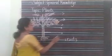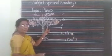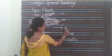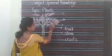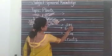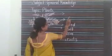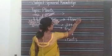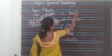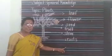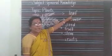Next, stem. Next, fruit. This part is fruit. Inside the fruit is a seed. Next, this part is a flower. Next, this is leaf. These are parts of a plant: roots, stem, fruit, seed, flower and leaf.